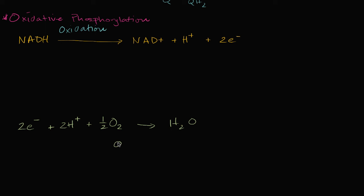So, if you just directly transferred these electrons from our NADH to the oxygen, it would release a lot of energy, but it would release so much energy that you wouldn't be able to capture most of it — you wouldn't be able to use it to actually do useful work. And so, the process of oxidative phosphorylation is all about doing this in a series of steps, transferring these electrons from one electron acceptor to another. Every time we do that, we release some energy, and that energy can, in a more controlled way, be used to actually do work — in this case, pumping hydrogen protons across a membrane. And then that gradient that forms can actually be used to generate ATP.